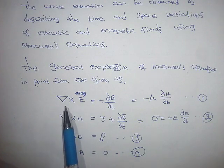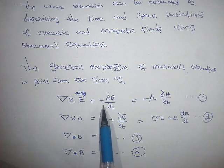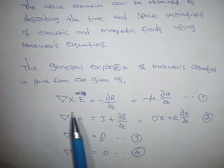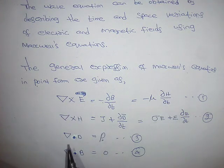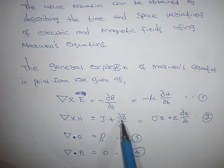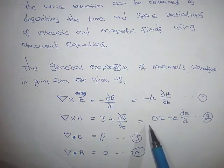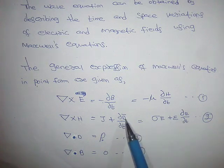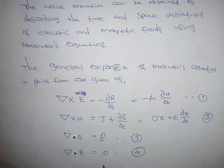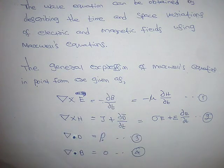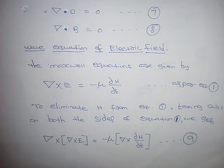Now, recalling Maxwell's equations: the first equation is del cross E equal to minus dou B by dou t. Since B equals mu times H, this gives del cross E equal to minus mu times dou H by dou t. The second Maxwell equation gives del cross H equal to J plus dou D by dou t, where J is the current density related to the electric field intensity. We define J as sigma E plus epsilon dou E by dou t.